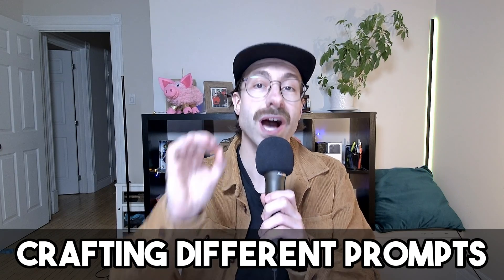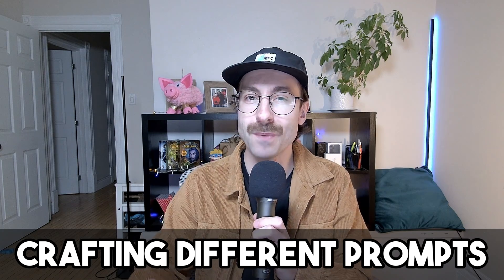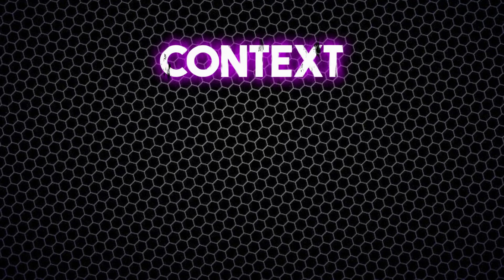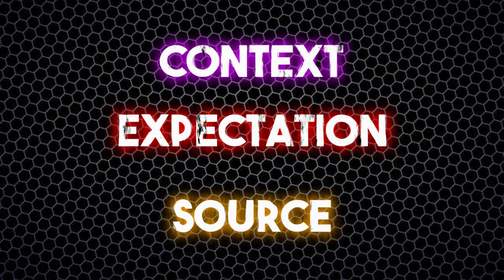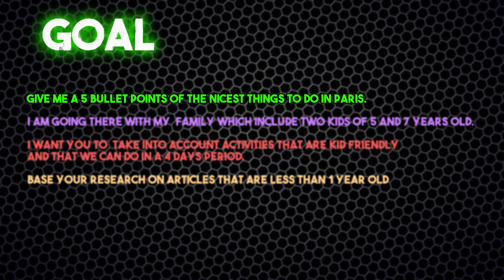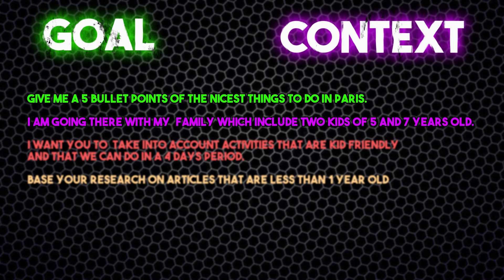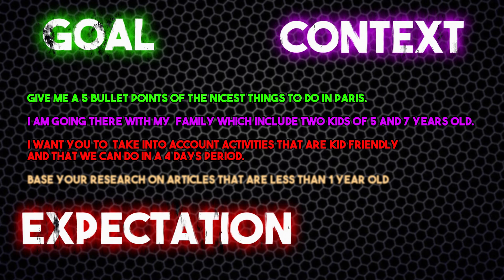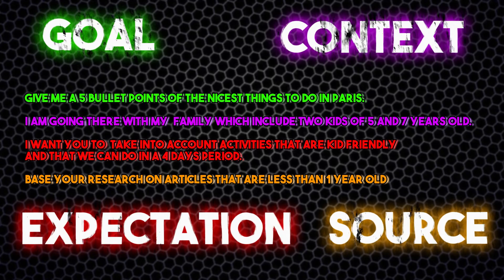Now that we know how to craft the perfect prompt, let's try it. Let's mix and match the secret prompt formula ingredients — I'll switch the context, the expectation, and the source and see how it affects the results. Our first prompt was: 'Give me five bullet points of the nicest things to do in Paris. I'm going there with my family, which includes two kids. I want you to take into account activities that are kid-friendly and we can do it in four days,' and so on.